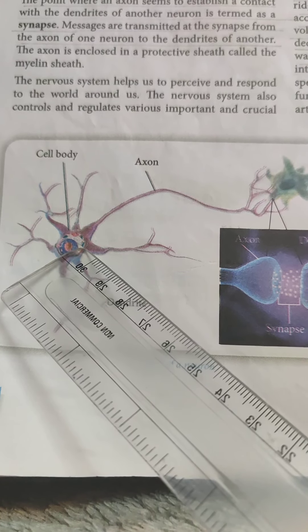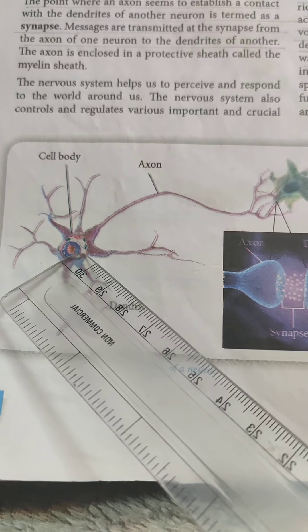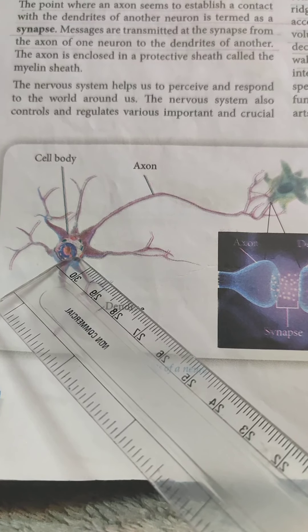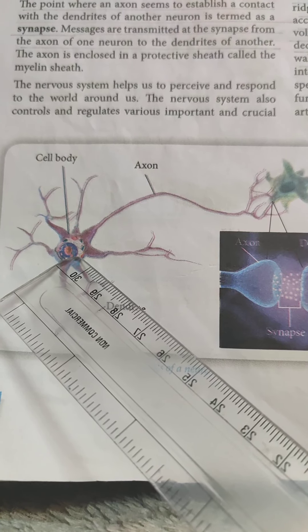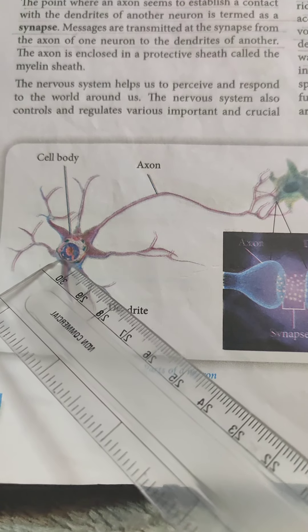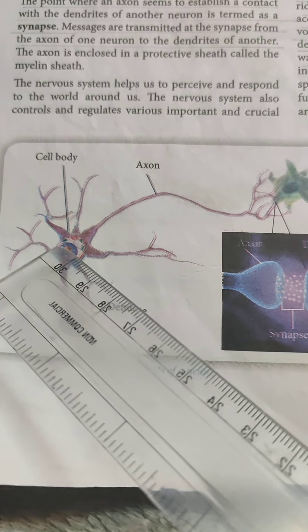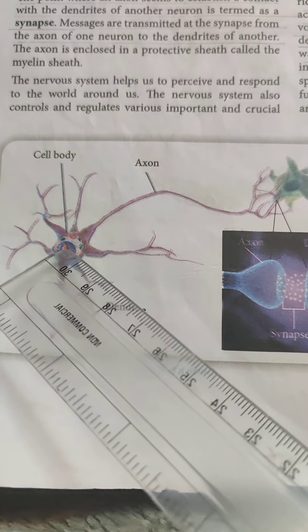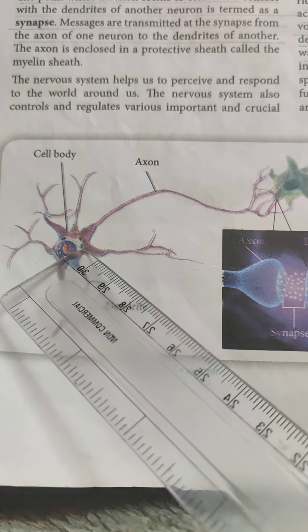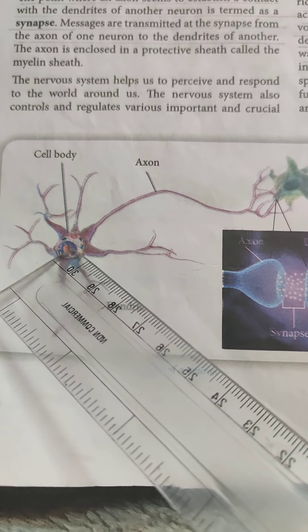Cell body, also known as cyton, is the main body of the neuron. It is shaped like a bulb and contains the nucleus, and there are some other cell organelles also present here.